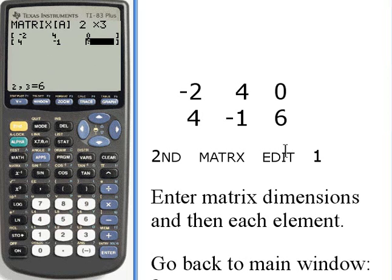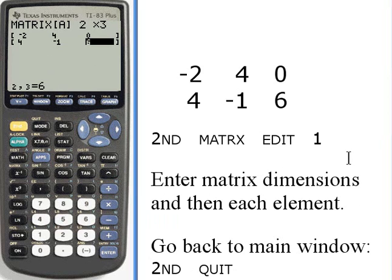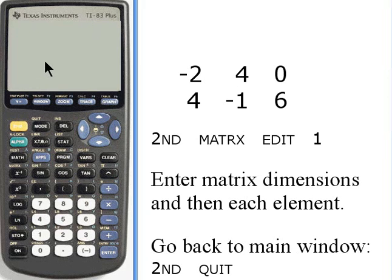Once you've entered your elements into the matrix, you want to quit out of this window. So we'll press 2nd, and then right next to the second button is the one that says quit above the button. And now we're back in the main screen.